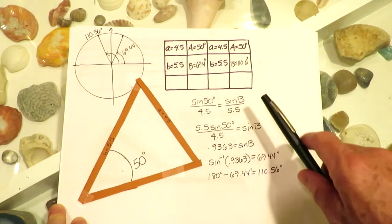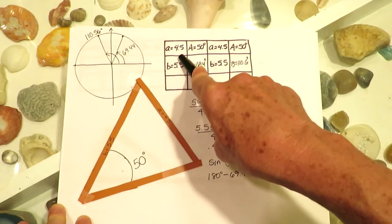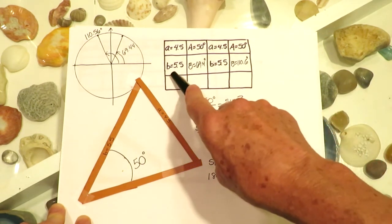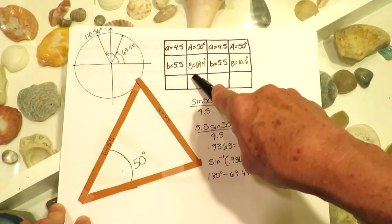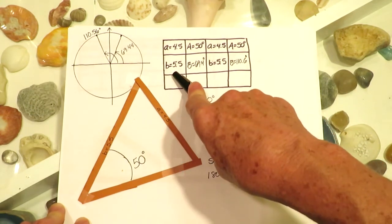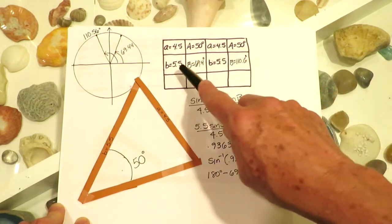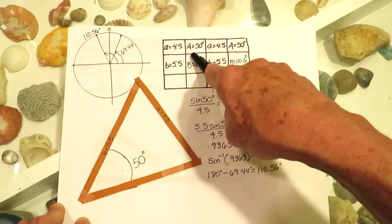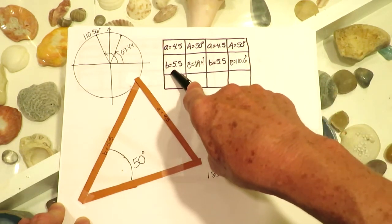For this particular problem, we were given a side length of 4.5 being opposite an angle of 50 degrees. We were also given a side length of 5.5, and we were not initially given the angle opposite side B. So I'm filling in the chart with the information given: 4.5 for side A, 50 degrees for angle A, and 5.5 for side B.